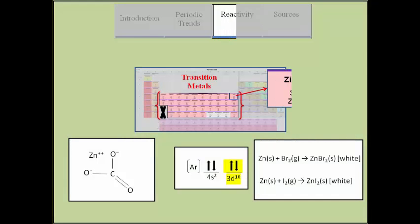Zinc reacts with carbon dioxide to form a layer of zinc carbonate which protects the metal from reactions with air and water. Zinc burns with oxygen, does not react with water, and reacts with halogens.